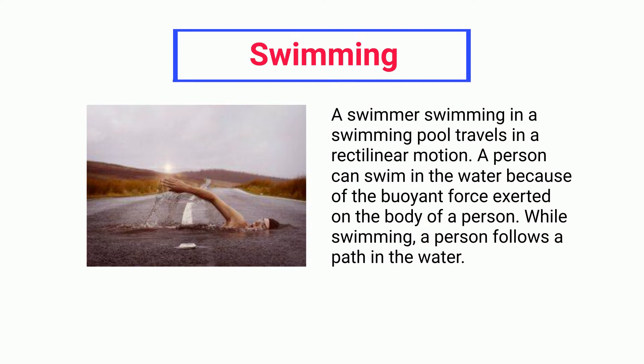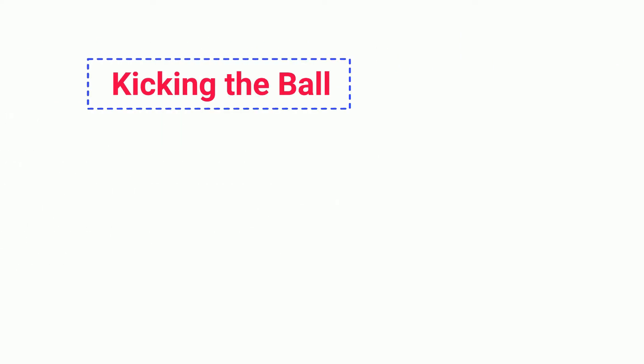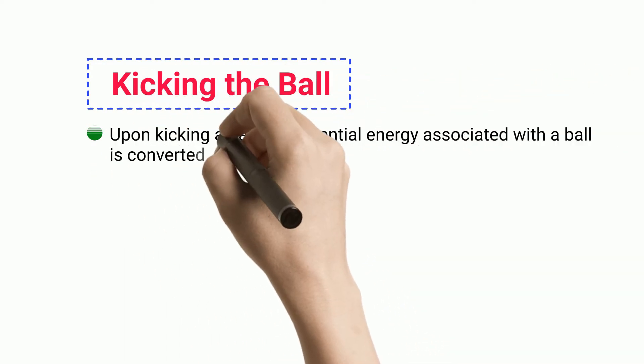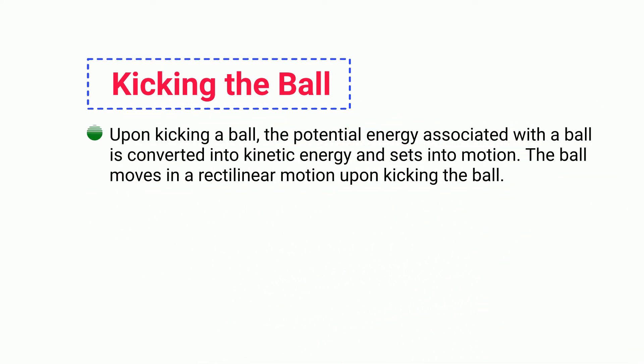A person can swim in the water because of the buoyant force exerted on the body while swimming. A person follows a path in the water. Kicking the ball: Upon kicking a ball, the potential energy associated with the ball is converted into kinetic energy and sets into motion. The ball moves in a rectilinear motion upon kicking the ball.